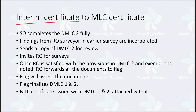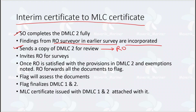To change from the interim certificate to the main MLC certificate, the owner must completely fill DMLC Part 2 — establishing procedures to ensure MLC guidelines are followed for each clause as mentioned in DMLC Part 1. Findings from the RO surveyor in the earlier survey are incorporated into the procedures in DMLC Part 2. The ship owner sends a copy of DMLC Part 2 to the RO for review and also invites the RO for further surveys.